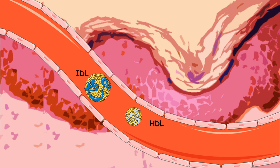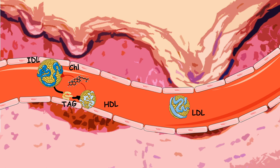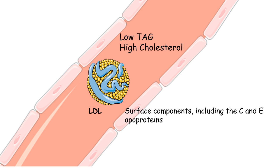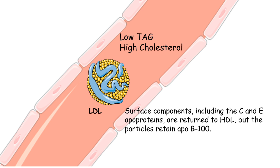IDL is a very transient species that interacts with HDL. HDL takes up more triglyceride from IDL and in exchange gives some cholesterol and esterified cholesterol back to IDL. As a result, this transient IDL molecule ends up with high levels of cholesterol and very low triglyceride, and is now known as LDL. LDL has very high levels of cholesterol and very low triglyceride, and on its surface it has apolipoprotein C, E, and B100.